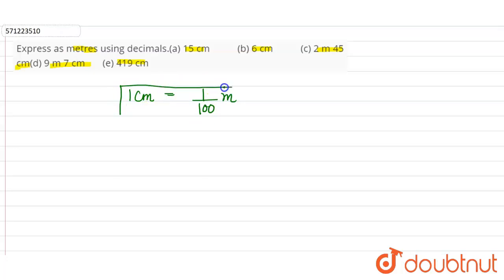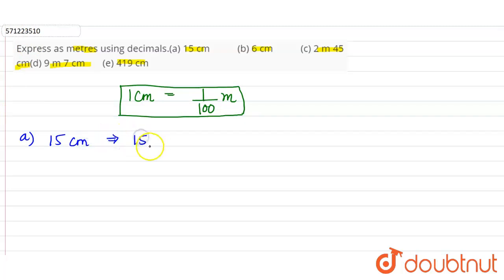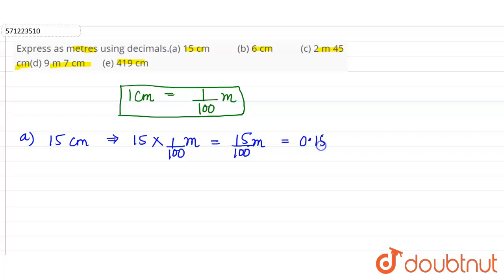We have to convert centimeters into meters. Part A is 15 centimeter. Since 1 centimeter equals 1 by 100 meter, 15 centimeter equals 15 multiplied by 1 by 100 meter, which is 15 divided by 100 meter. As there are two zeros in the denominator, we place the decimal two places from the left, giving us 0.15 meter.